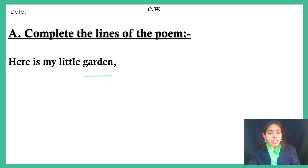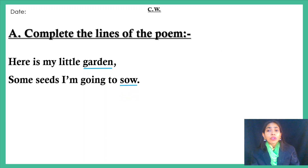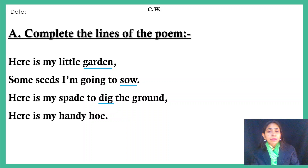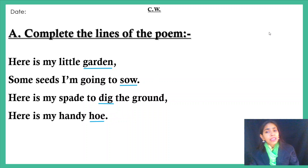Now let us revise completing the lines of the poem. For example, 'Here is my little ___' — you have to fill in the word 'garden', spelling G-A-R-D-E-N. 'Some seeds I am going to ___' — fill in 'sow', S-O-W. 'Here is my spade to ___ the ground' — fill in 'dig', D-I-G. 'Here is my handy ___' — fill in 'hoe', H-O-E. This is how the poem fill-in-the-blank questions will come.